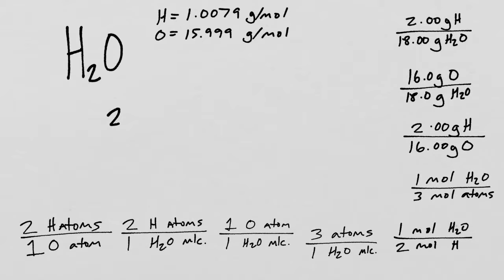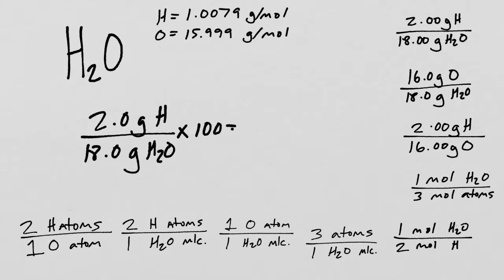But we could look at the percent of hydrogen: 2.0 grams of hydrogen over 18 grams of water times 100 gives us about 11.1 percent mass of hydrogen. So hydrogen is 11.1 percent by mass of the entire water molecule. And we can even use that as a conversion factor.